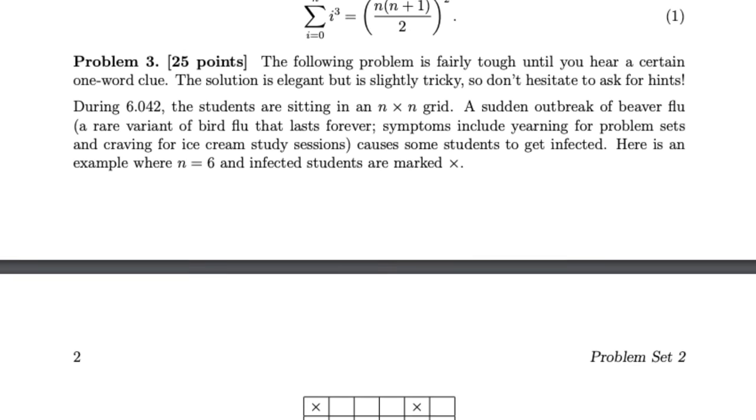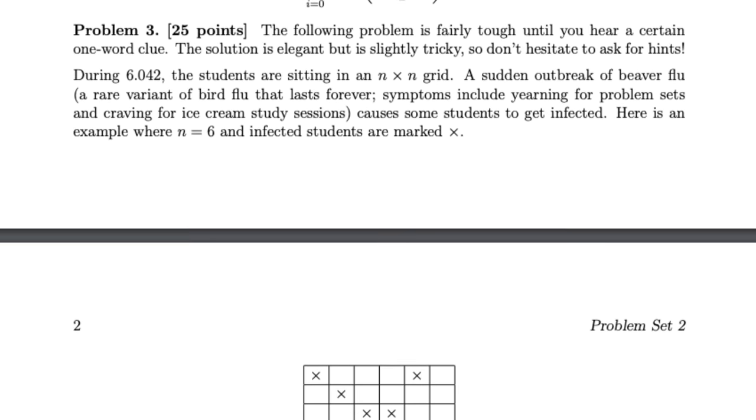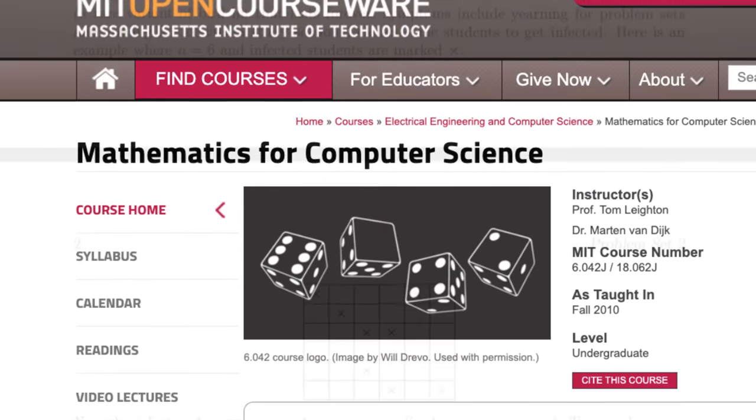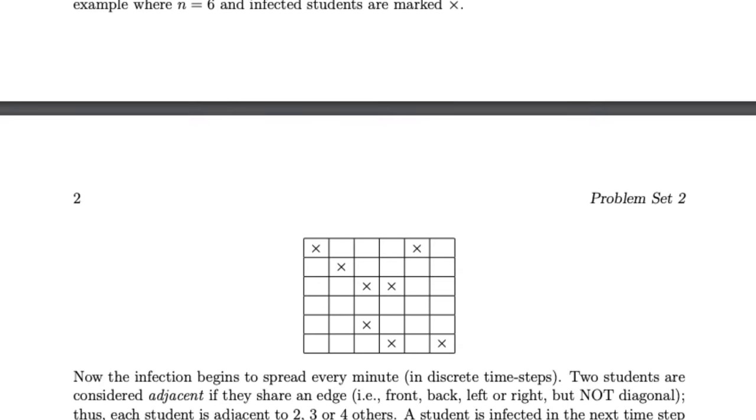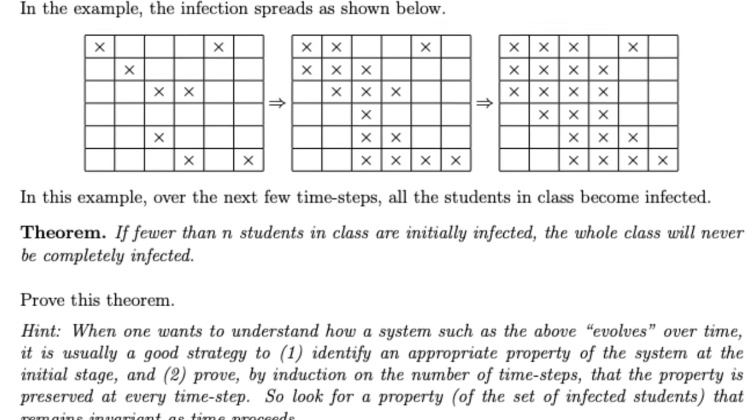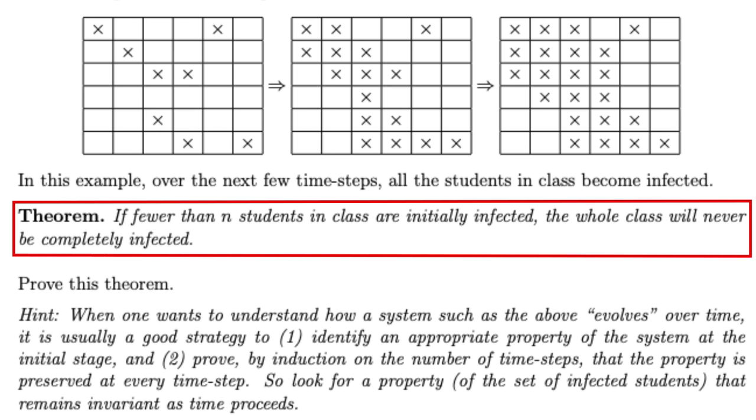This is actually question 3 from problem set 2 of an MIT course called mathematics for computer science, which by the way is a really interesting class that's available totally for free online, like textbook lectures and everything included. So I'll link that below for those who are interested. But anyway, the question as stated is actually more general than what I said. It asks for a proof that for any n by n grid, if fewer than n students are initially infected, then the whole class will never be completely infected. I'm just going more specific for simplicity. Now even though this question is found here in a college level math class, the underlying math is extremely simplistic, just not obvious at first.